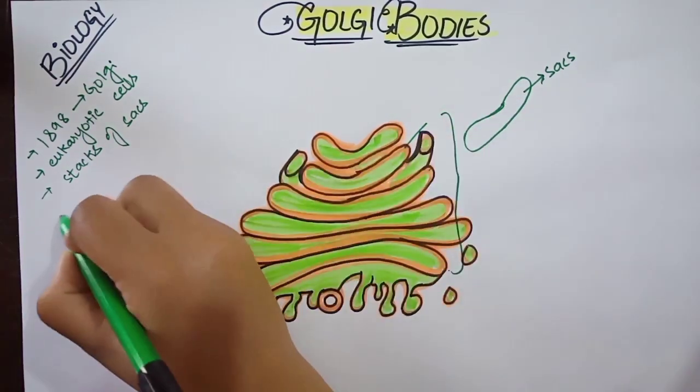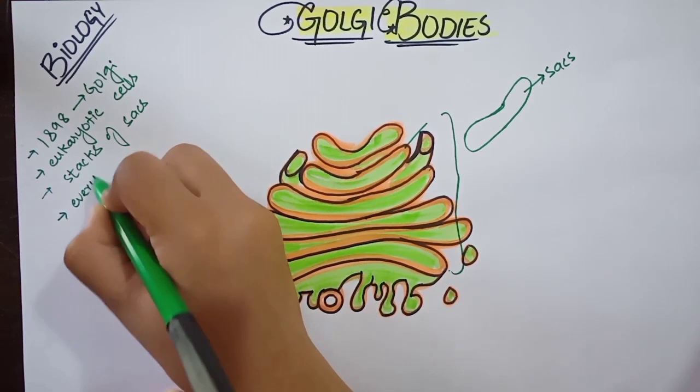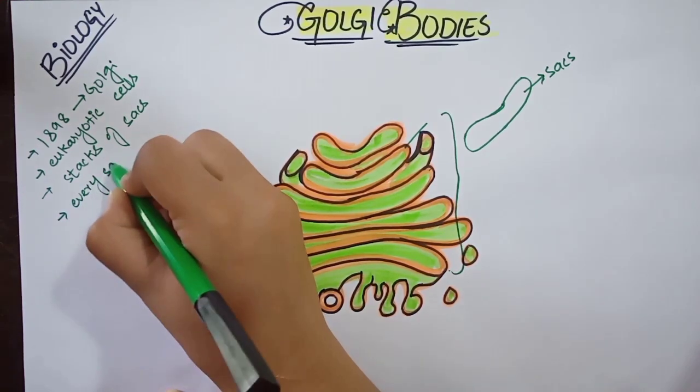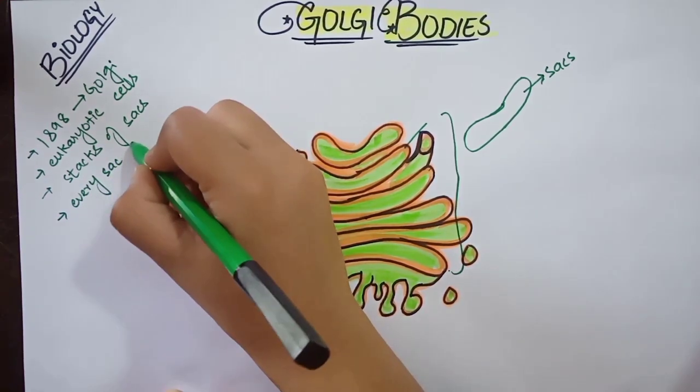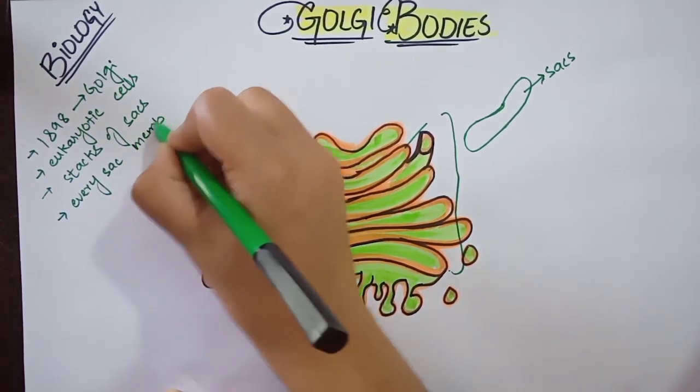Each sac is membrane bound — every sac is membrane bound, giving it a double membrane structure.